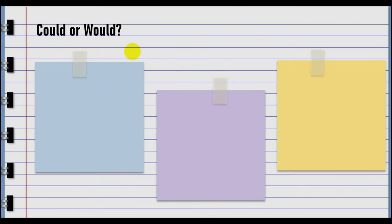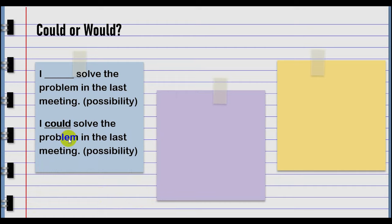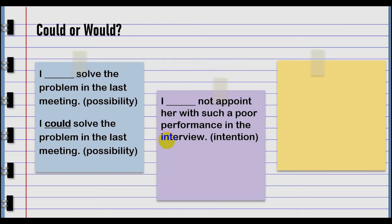Could or would? Could meaning possibility: I could solve the problem in the last meeting. Would meaning intention: I would not appoint her with such a poor performance in the interview.